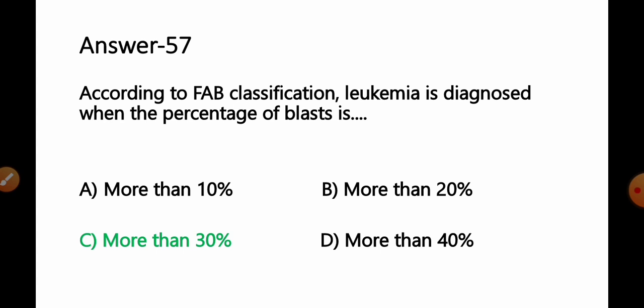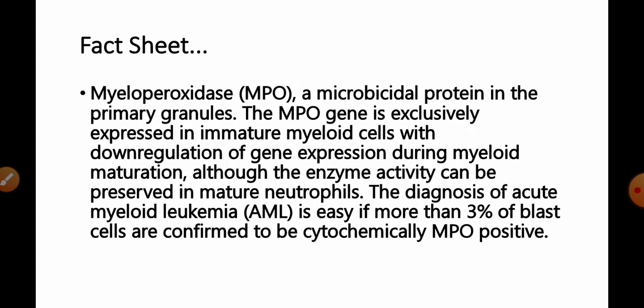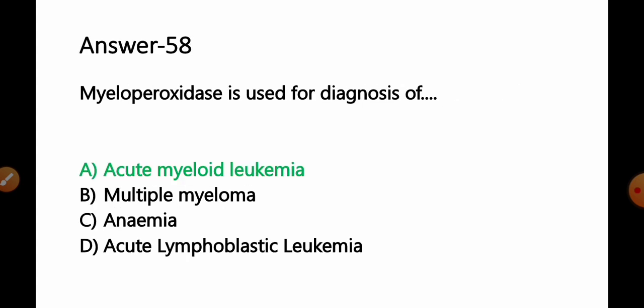Question number 58: Myeloperoxidase is used for the diagnosis of — option A: acute myeloid leukemia, B: multiple myeloma, C: anemia, D: acute lymphoblastic leukemia. Myeloperoxidase (MPO) is a microbicidal protein in the primary granules. The MPO gene is exclusively expressed in immature myeloid cells. If more than 3% of blast cells are cytochemically myeloperoxidase positive, it confirms acute myeloid leukemia (AML). So option A is correct.